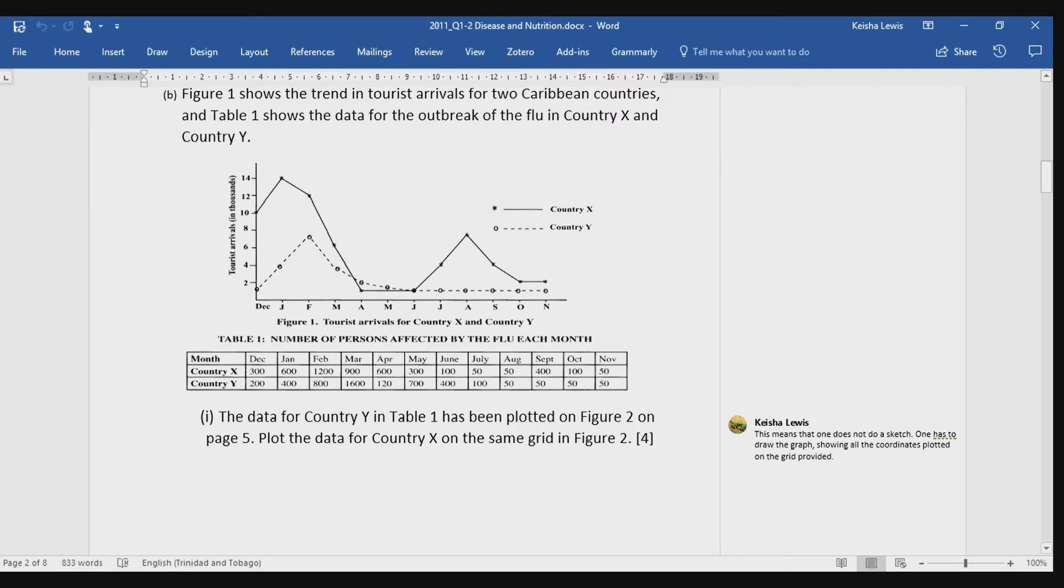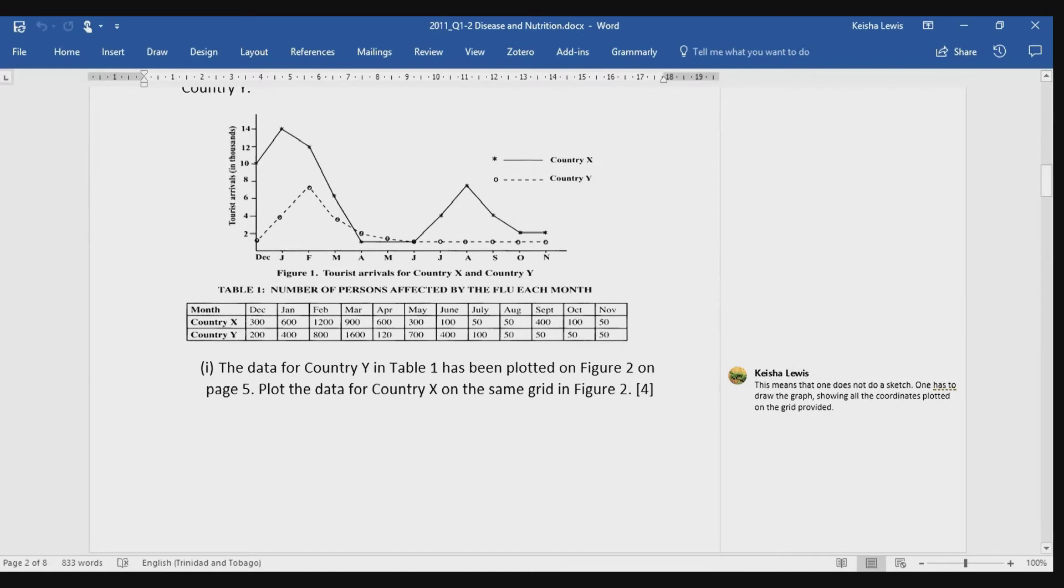For those of you that already started reading the question, congratulations. In this episode, we essentially have two forms of data presentation, two sets of data that are being presented in different ways. One set of data tracks tourist arrivals for two countries, country X and country Y, over 12 months from December to November. This data is presented in the form of a line graph. The second set of data tracks the number of persons affected by the flu each month, basically tracking a flu outbreak, over the same 12 months from December to November for the same two countries, country X and country Y.